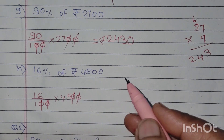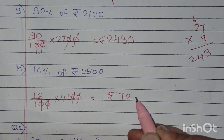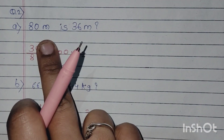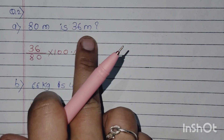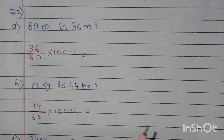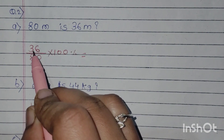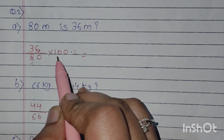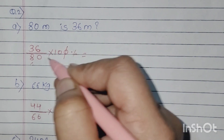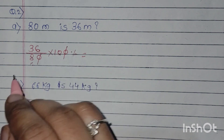Next, question number 2: what percent of 80 metres is 36 metres? मतलब 80 metres का 36 metres कितना percent है, तो हमें यहाँ पे percent find करना है। इसलिए total metres — 80 — वो हमें नीचे लिखना है, और 36 metres जो है वो ऊपर लिखना है, और 100 से multiply करना है क्योंकि हम percent find कर रहे हैं। यहाँ पे भी zeros cancel हो जाएंगे, और 8 और 10, 2 के table में आते हैं।